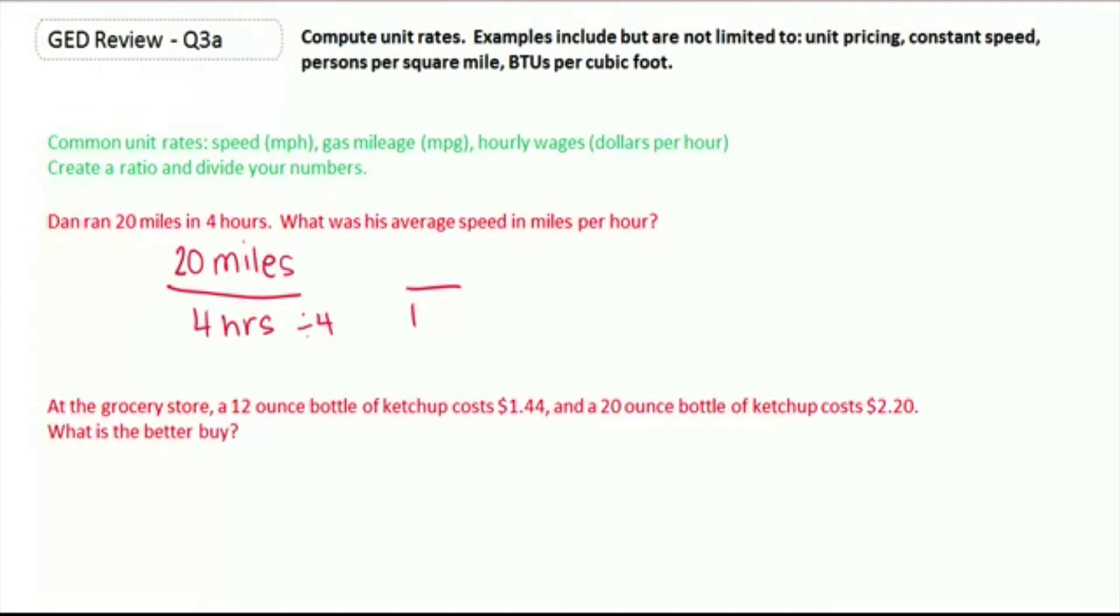Whatever you do to the denominator, you need to do to the numerator. So we're going to divide our numerator by 4 also. 20 divided by 4 gives us 5, and our unit up there was miles.